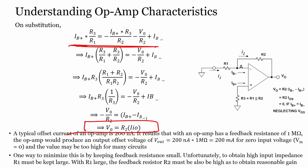A typical offset current of an op-amp is 200 nanoamperes. With a feedback resistance of 1 megaohm, the op-amp would produce an output voltage of 200 millivolts for zero input — this is the error generated at the output, and this value may be too high for many circuits.